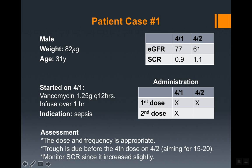Think of 1 gram Q12 as the baseline for the average patient in terms of age and weight, then work from there. This patient is younger and a little heavier, so 1.25 grams every 12 hours is appropriate. The dose and frequency are appropriate; the trough is due before the fourth dose on April 2nd. They'll aim for a trough of 15 to 20 since the patient is septic, and you should monitor the serum creatinine as it has increased slightly from 0.9 to 1.1.